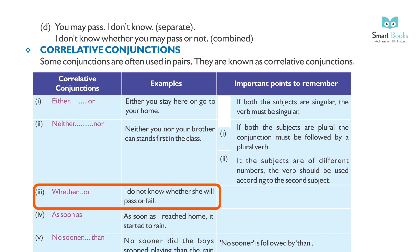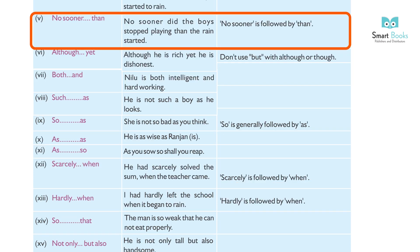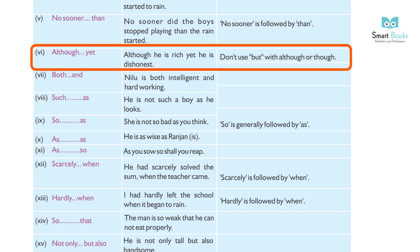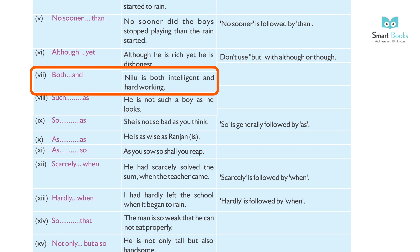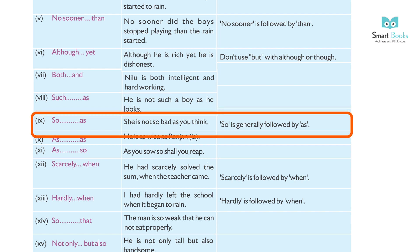If the subjects are of different numbers, the verb should agree with the second subject. 3. Whether...or — I do not know whether she will pass or fail. 4. As soon as — As soon as I reached home, it started to rain. 5. No sooner...than — No sooner did the boys stop playing than the rain came. Note: 'no sooner' is followed by 'than'. 6. Although...yet — Although he is rich, yet he is dishonest. Do not use 'but' with 'although' or 'though'. 7. Both...and — Nilu is both intelligent and hard-working.